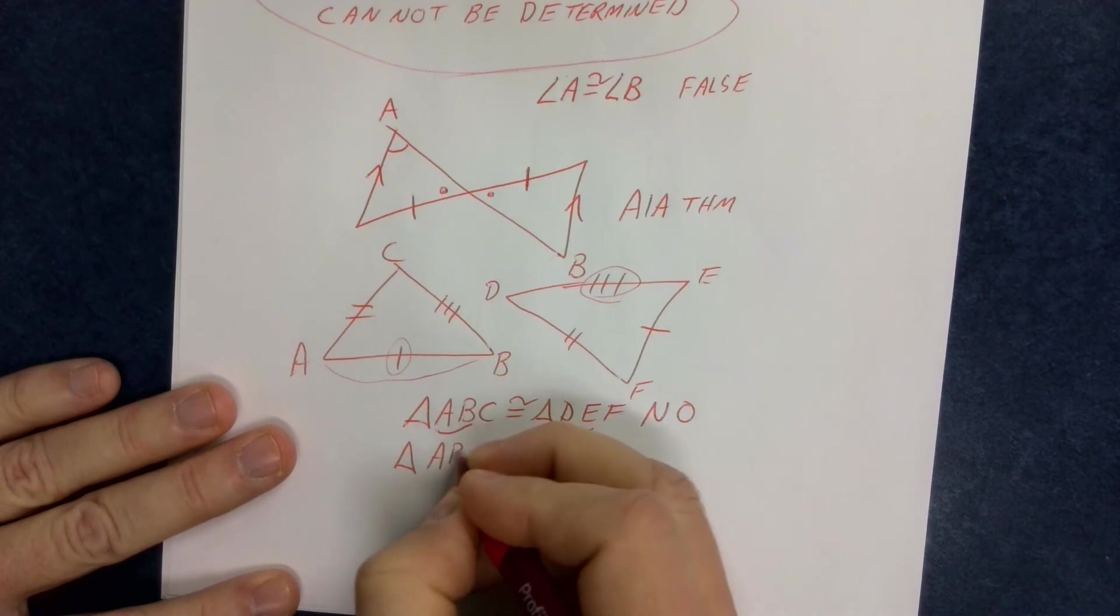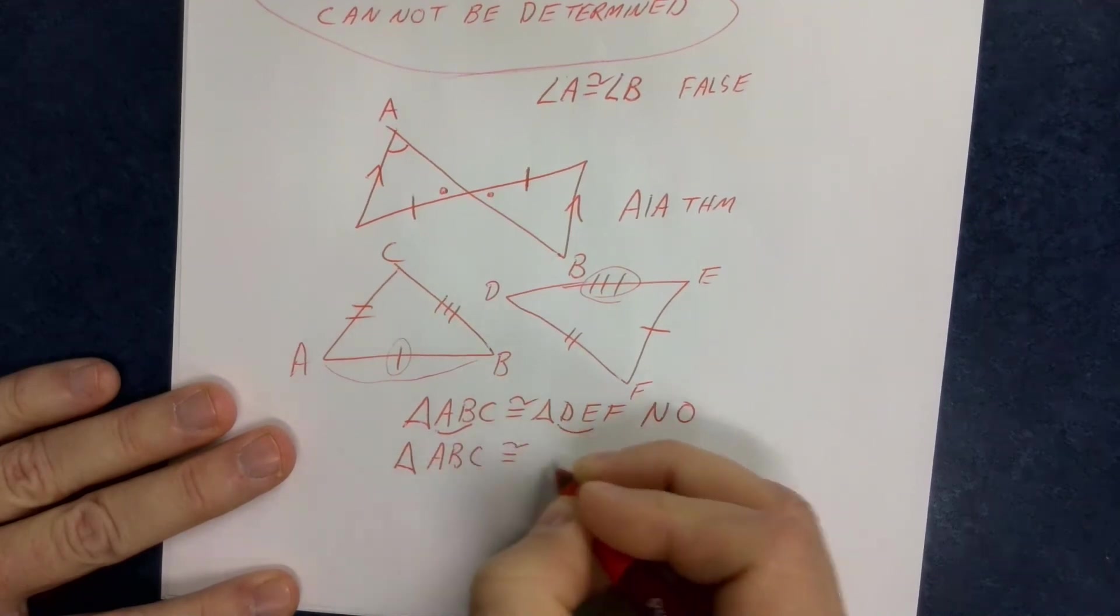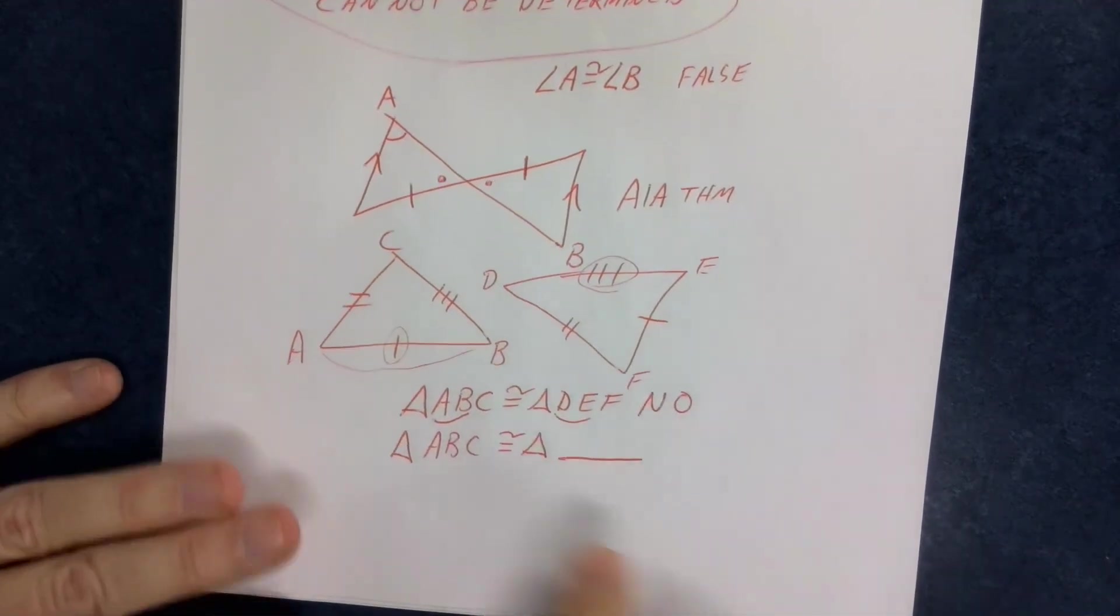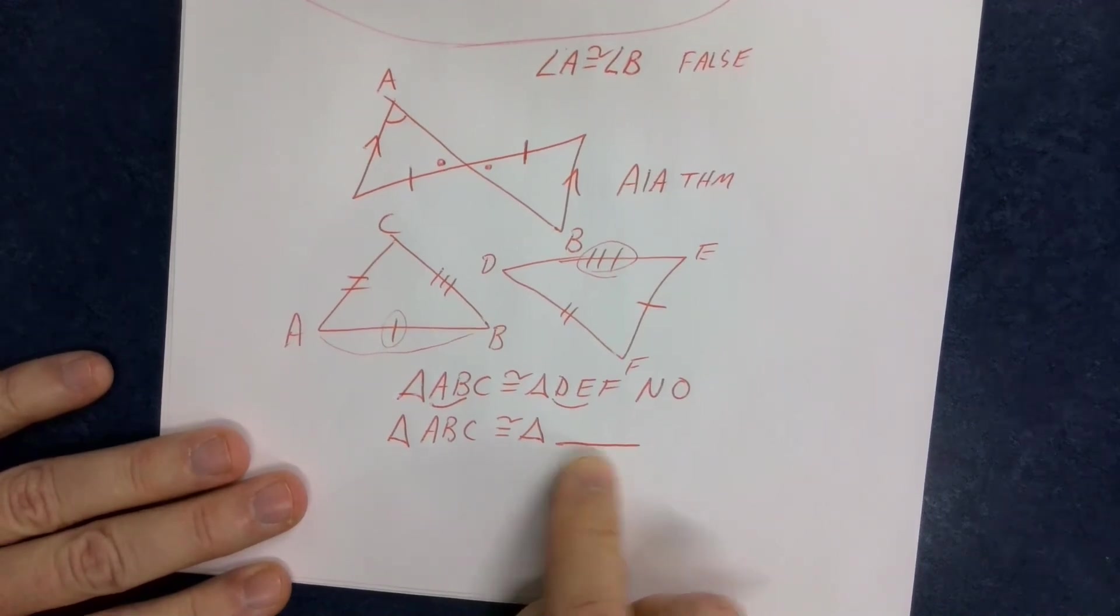Okay, then, well, what is triangle ABC congruent to? You would need to be able to fill in what those letters are.